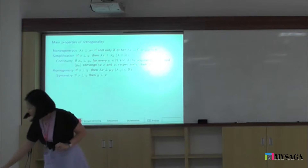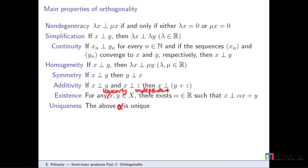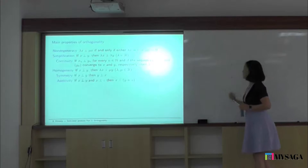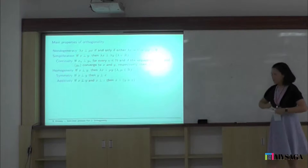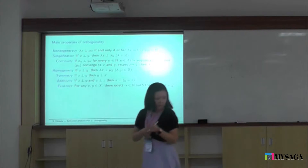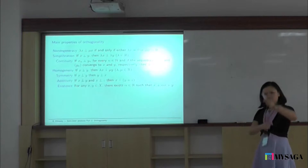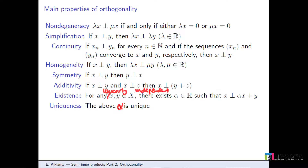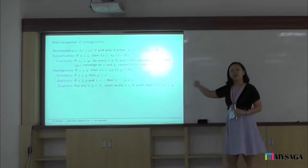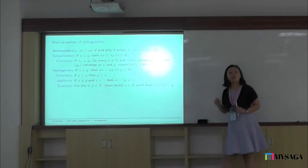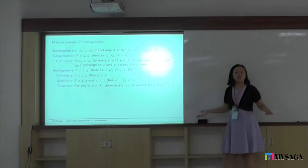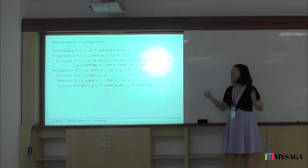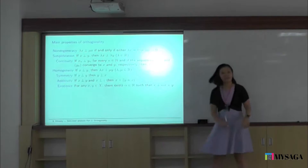Additivity: if I have a vector orthogonal to something and orthogonal to something else, obviously it should be orthogonal to their addition — in an inner product space. Existence: if I take any random two vectors in X, I should be able to find some alpha such that x is orthogonal to alpha x plus y. The idea of the existence property is to ensure that whenever you create a definition for orthogonality, there's at least one non-zero vector that is orthogonal to a given vector — because zero is orthogonal to everything.